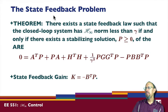So here's the state feedback problem. The theorem says there exists a state feedback law such that the closed-loop system has H infinity norm less than gamma if and only if there is a stabilizing solution P positive semi-definite. K is equal to minus B transpose P.